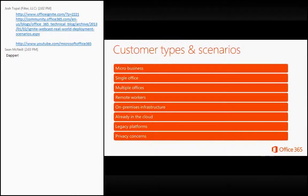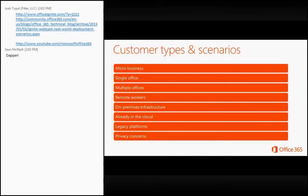The different customer types and scenarios we see really vary. There's no one way to categorize them. Some of the different customers we see are micro-businesses — anywhere from one to five people working from home or on the road — as well as single-office environments where people work from one location, don't travel much, or maybe have a few people going out to meetings. This also includes large companies with everybody in one building or floor.